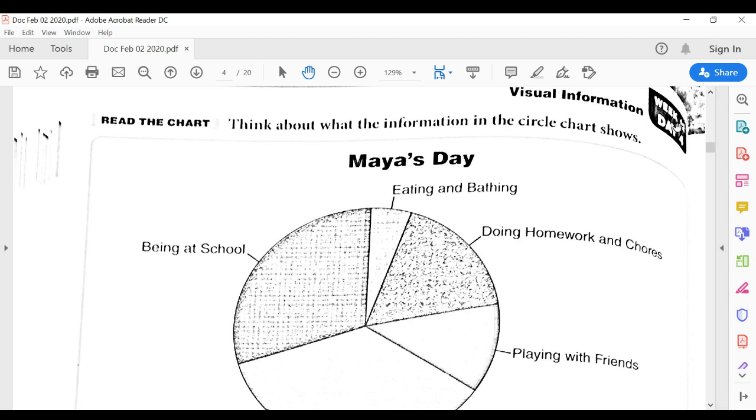Hello, today is week 12, day four. We have been looking at visual information and non-word features in books such as pictures, maps, and graphs.